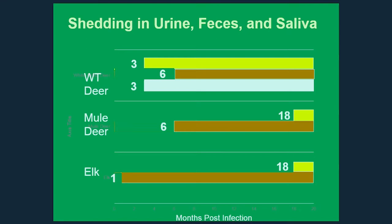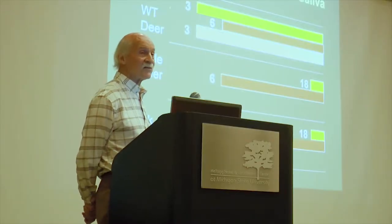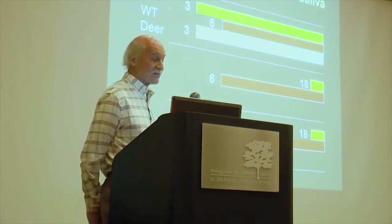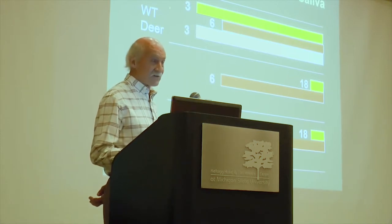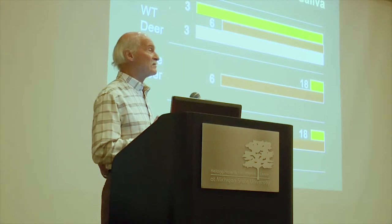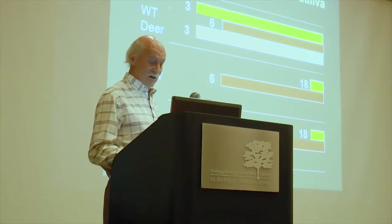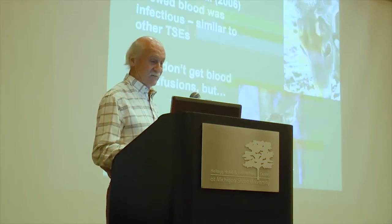For mule deer, the earliest documentation for urine is 18 months and feces at six months, with no data available for saliva. For elk, urine shedding was documented at 18 months, but feces shedding as early as one month. I suspect many of these animals are actually shedding earlier than we've documented. These animals are shedding infectious prions for quite a long time, and quite soon after they become infected with CWD.